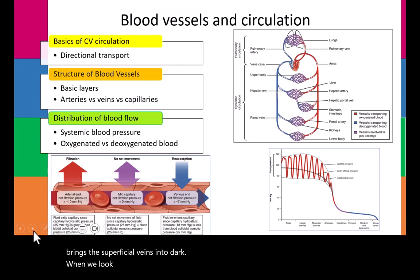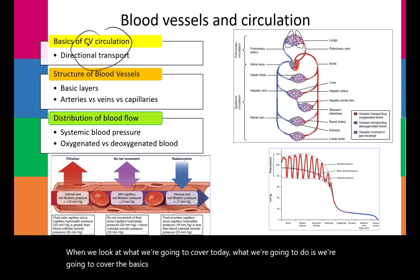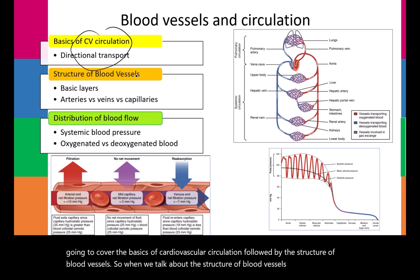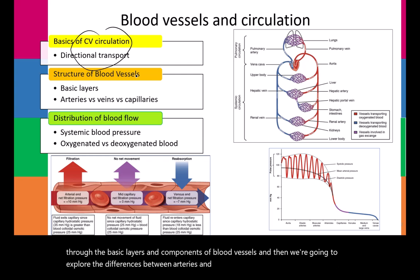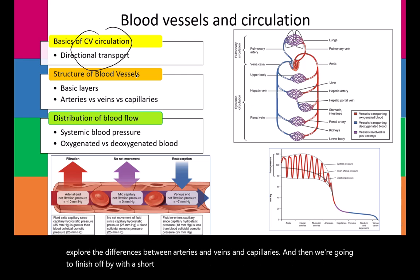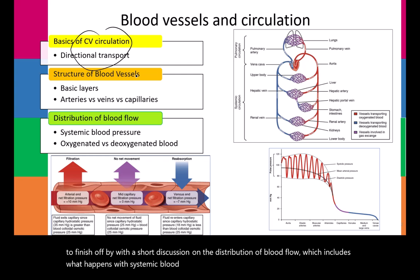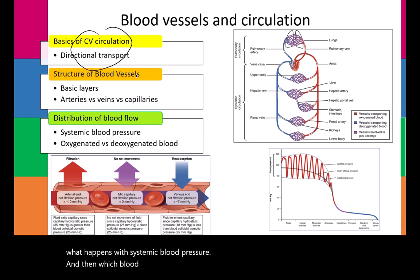Today we're going to cover the basics of cardiovascular circulation, followed by the structure of blood vessels — including the basic layers and components, and the differences between arteries, veins, and capillaries. We'll finish with a short discussion on the distribution of blood flow, including systemic blood pressure and which blood vessels carry oxygenated versus deoxygenated blood.